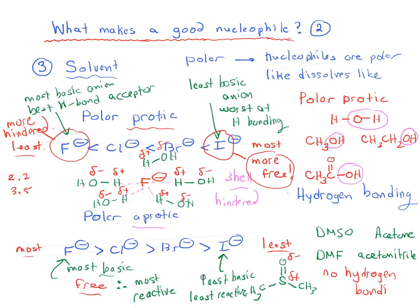That's the trend for nucleophilicity in solvents. Comparing polar protic and polar aprotic solvents: as you go down the periodic table from fluoride to chloride to bromide to iodide, in polar protic solvents fluoride hydrogen bonds the most, so it's the most hindered and worst nucleophile, while iodide hydrogen bonds the least so it's most free and most reactive. In polar aprotic solvents the trend is reversed — fluoride is most reactive because it's the most basic, and iodide is least reactive because it's the least basic.